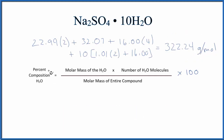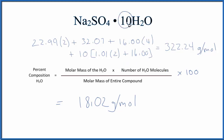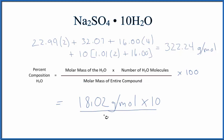Let's use the equation to figure out the percent composition of water. We take the molar mass of water — that's 18.02 grams per mole — and we multiply that by the number of water molecules. There are 10 separate water molecules around the sodium sulfate, so we multiply by 10, then divide by the molar mass of the entire compound. We multiply all of this by 100, and that gives us a percent.